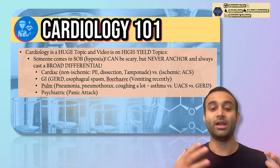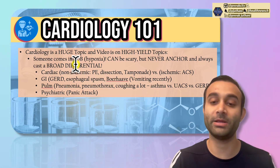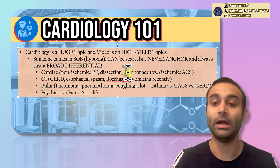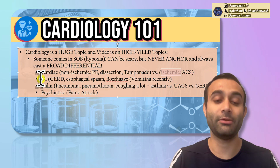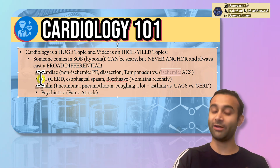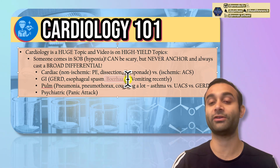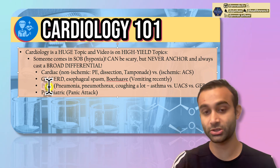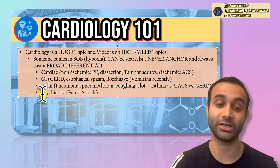If someone comes in with shortness of breath, don't ever just assume it's the heart. While you always want to rule out an underlying heart attack, you should also be thinking about other things like a pulmonary embolism, a dissection, a tamponade — which is when fluid builds up around the heart — or ischemia, also known as acute coronary syndrome. You can also have underlying GI issues such as GERD or Boerhaave syndrome, where vomiting can cause a tear in your esophagus. Similarly, you can have lung issues — pneumonia, pneumothorax, asthma — or even psychiatric conditions such as a panic attack.